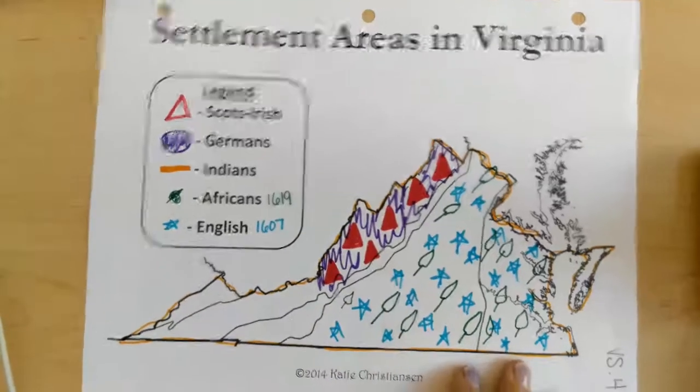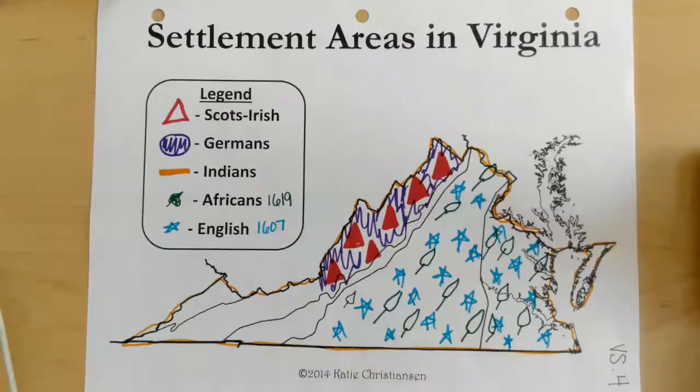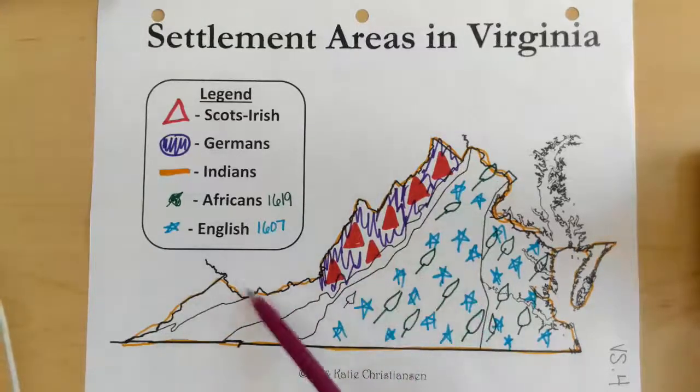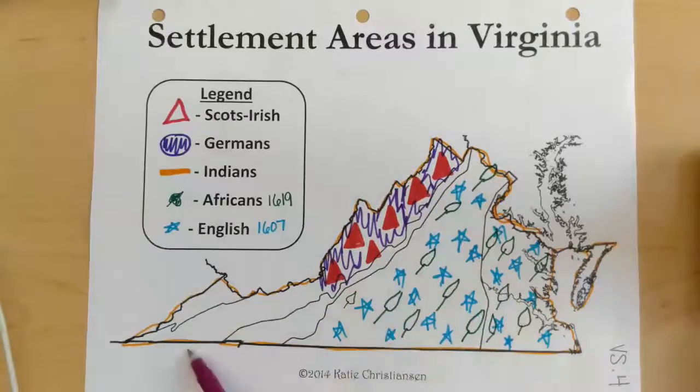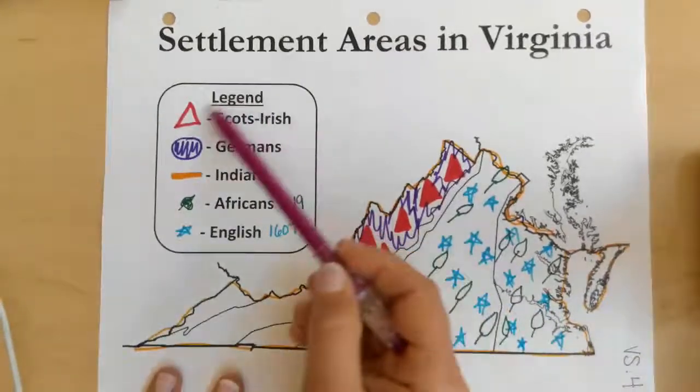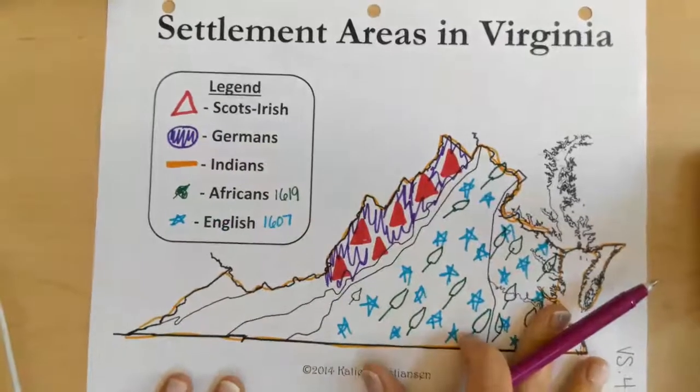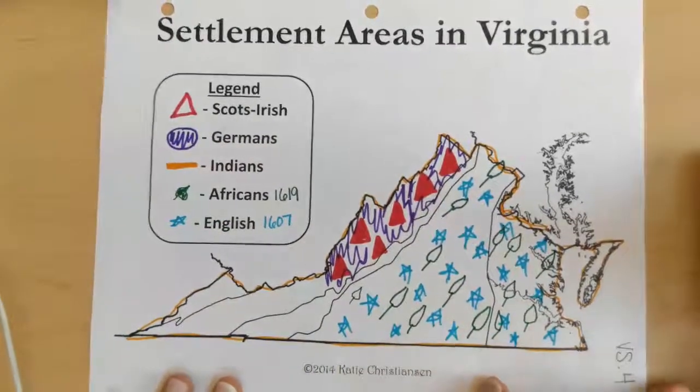All right boys and girls, so here is an example of what our anchor chart will look like when we are finished with it. You will notice that we have the state of Virginia and we are also going to go by this key here. But you do not have a copy of this, so we're going to create it on notebook paper the best way that we can. Go ahead and get out a sheet of notebook paper like this and make sure that you have your crayons or colored pencils to complete this anchor chart.